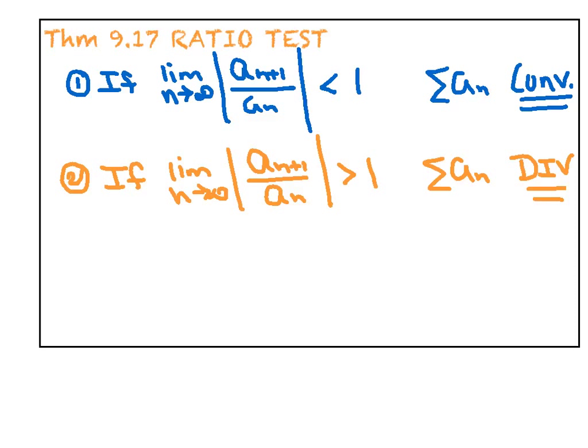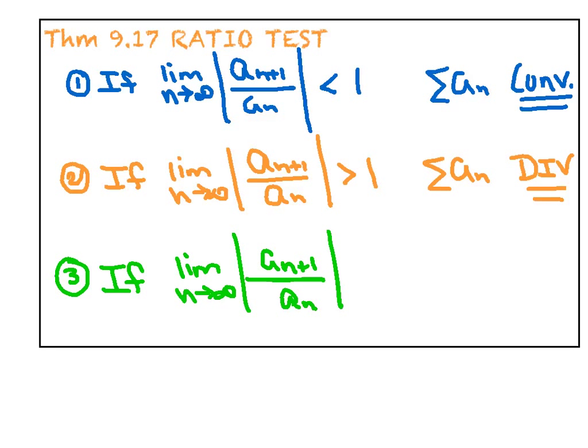The third one is kind of a peculiar one, and we're going to get this more than you'd expect. It says if that limit turns out to actually equal one, then the series is inconclusive as to whether it converges or diverges. That just means the ratio test didn't work. Let's go back and start over and try to pick a different test.